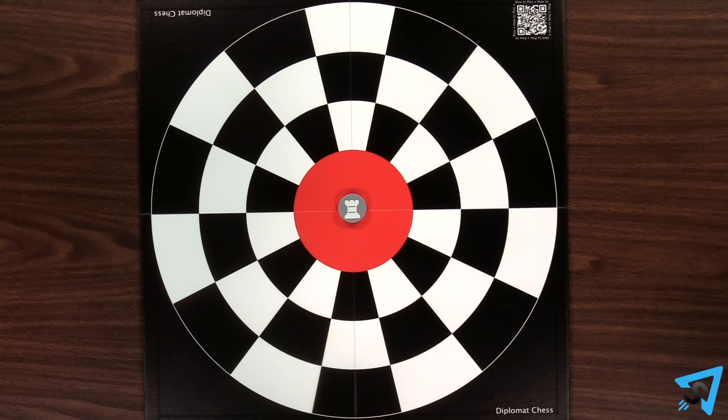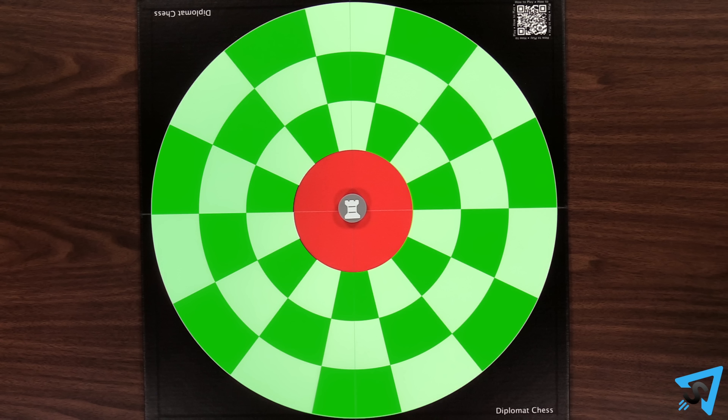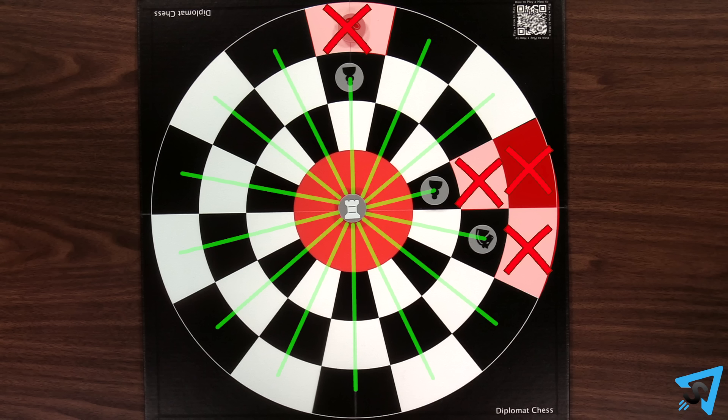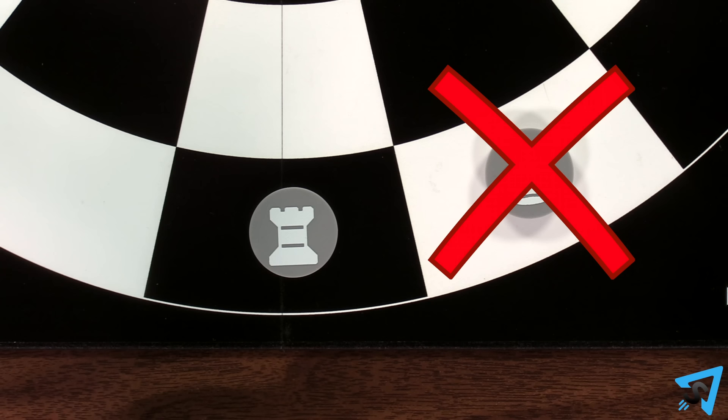A rook in the center space can reach any space on the board in a straight line outwards unless its path is obstructed by another piece. You are not allowed to castle.